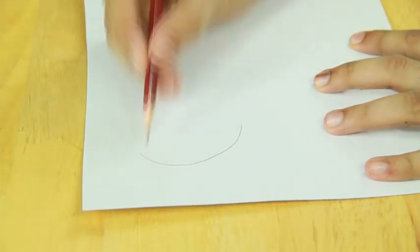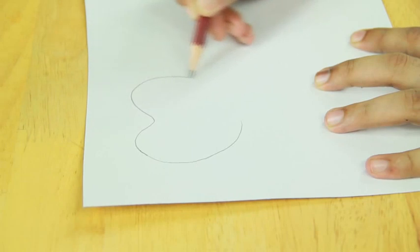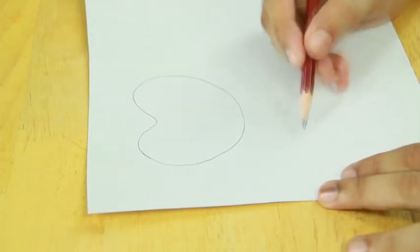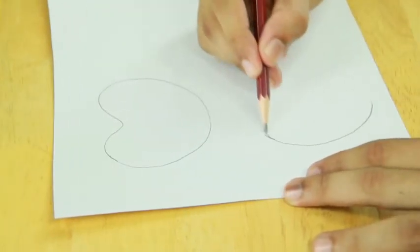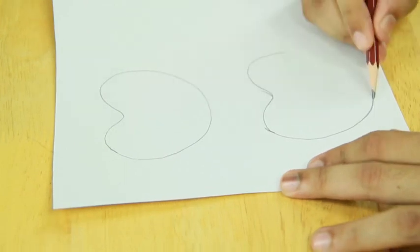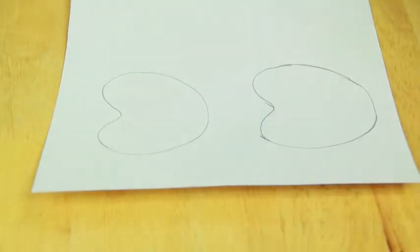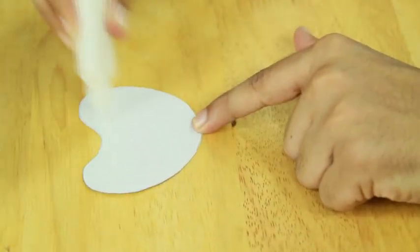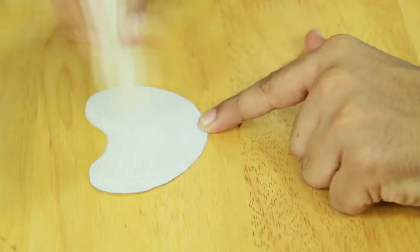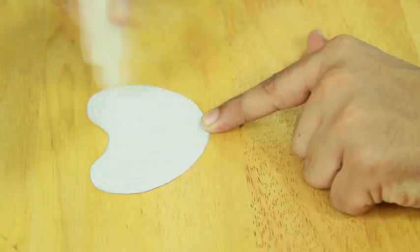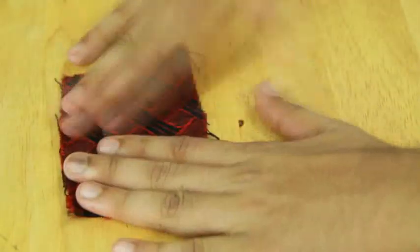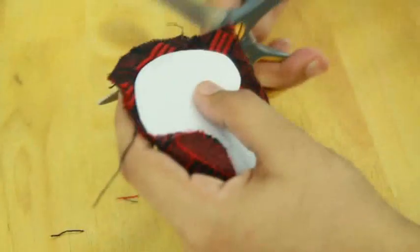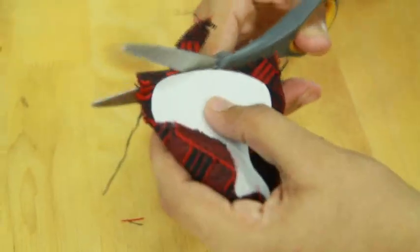Next take a chart paper. Draw the outline of two wings on it and cut it. Now paste cloth scraps on both sides of the wings using fabric glue. Cut out the extra cloth along the outline of the wings.